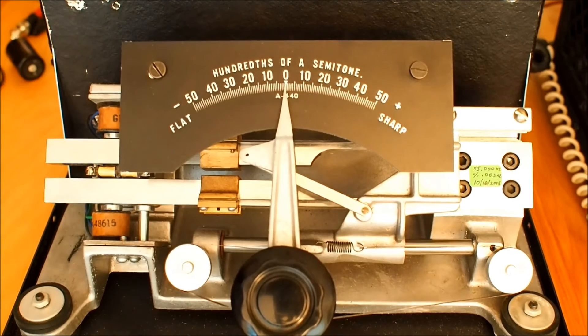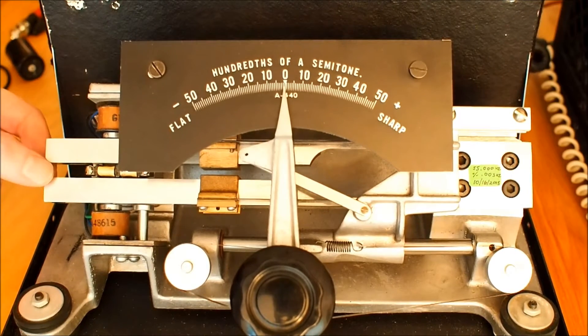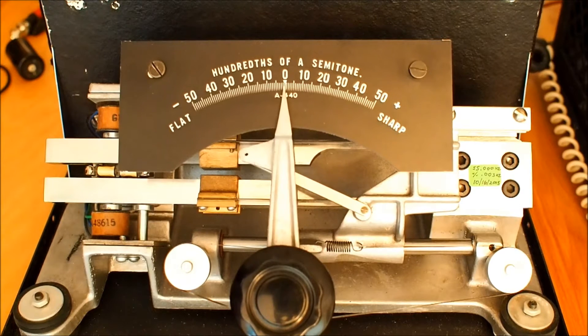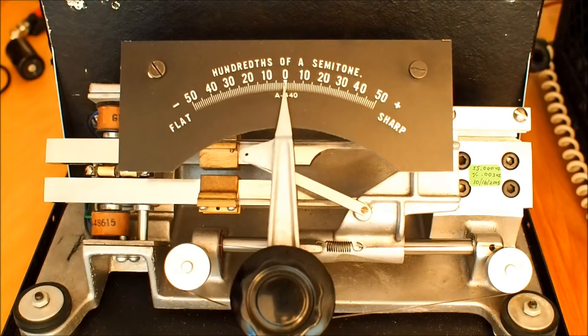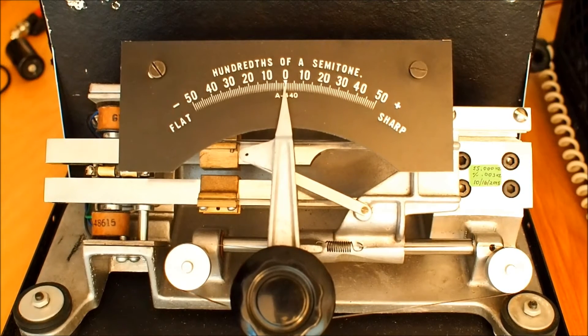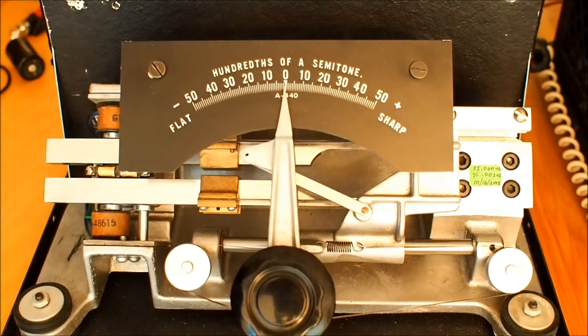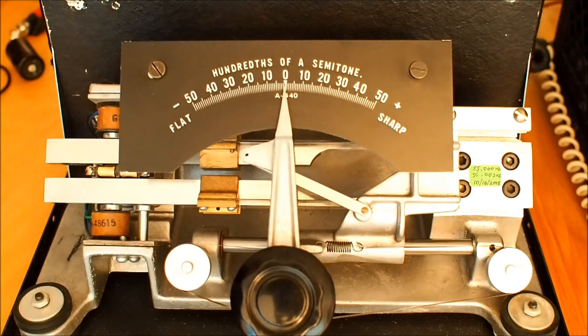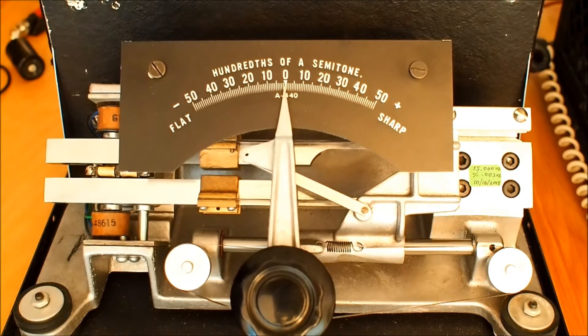The tuning fork is made of an alloy that Kahn refers to as Connivar, C-O-N-N-I-V-A-R. If anybody has any information on this alloy, I'd love to hear it, because I've looked around, I've searched the internet, and I can't find anything mentioned about it other than in Kahn's sales literature.